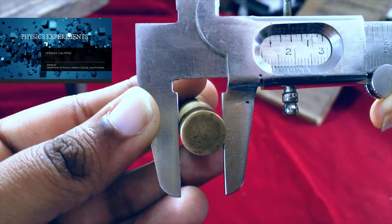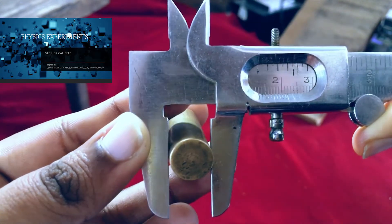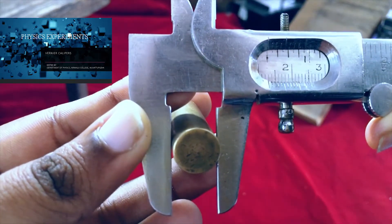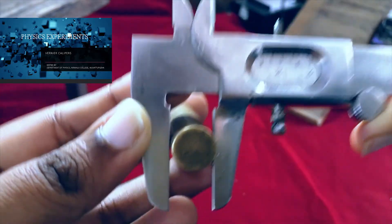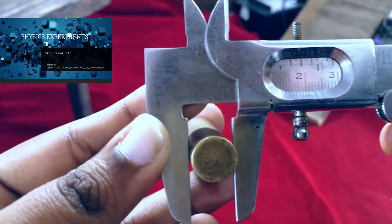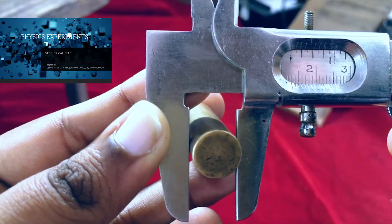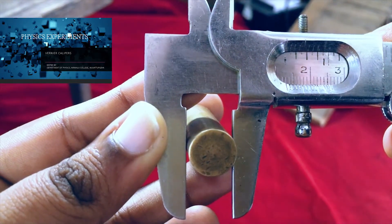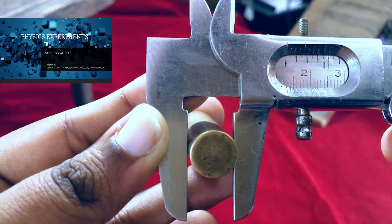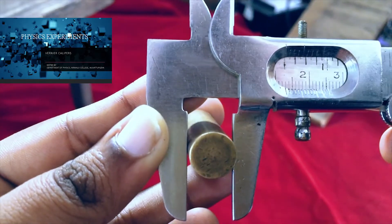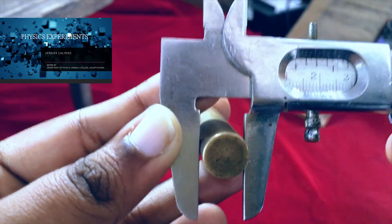The reading is 1.2. Now, let's take the vernier scale reading. The vernier scale reading is 7.